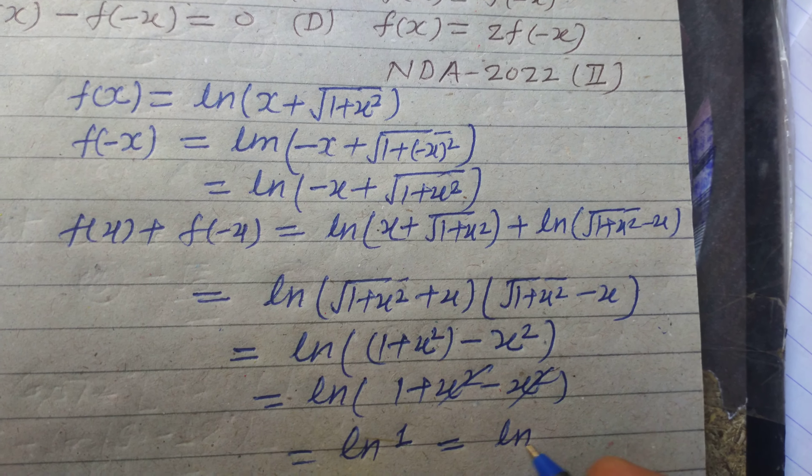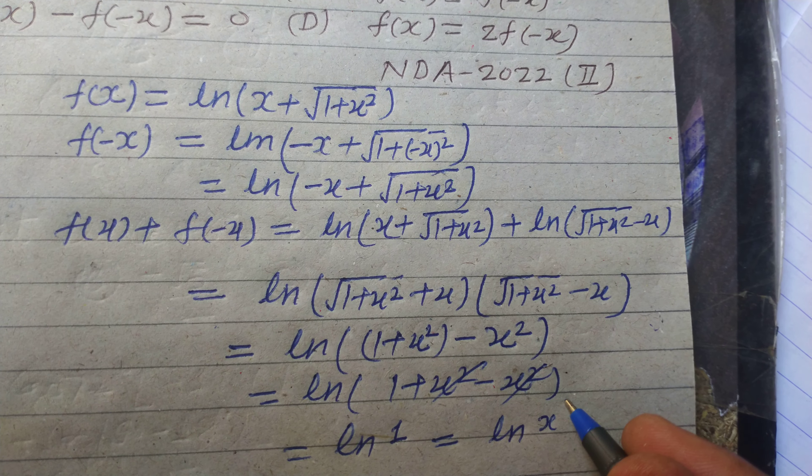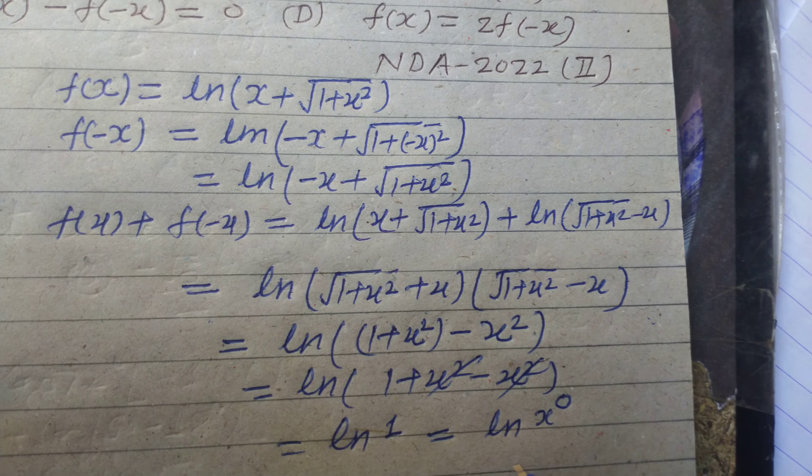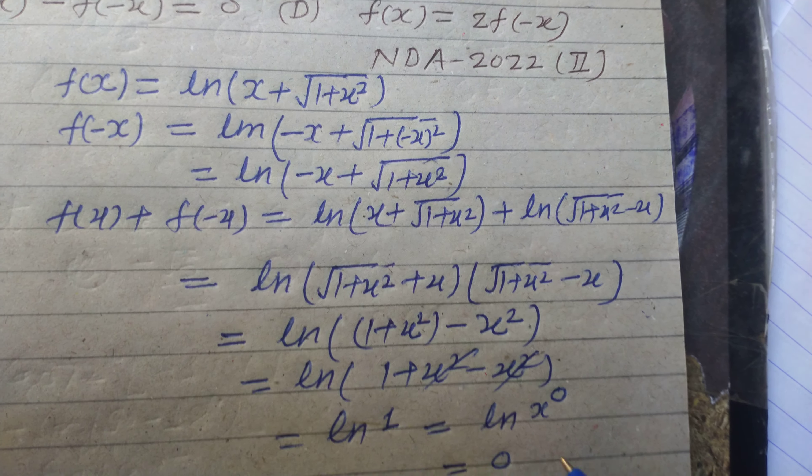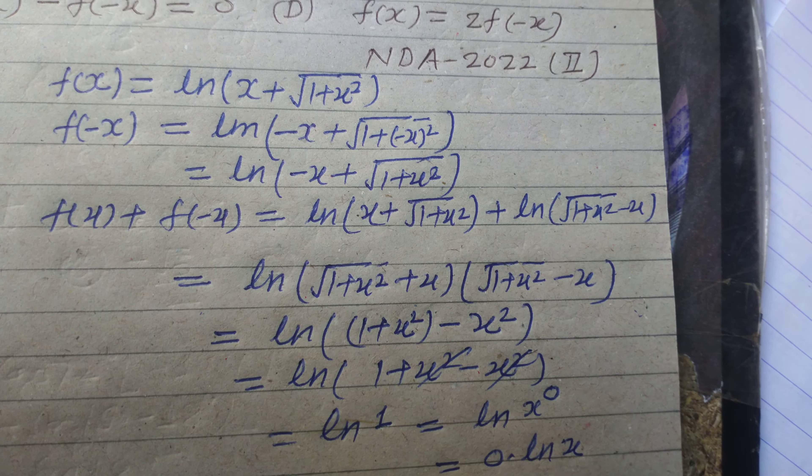ln(1) means ln(x^0). Or we can write this as 0·ln(x) which is 0.